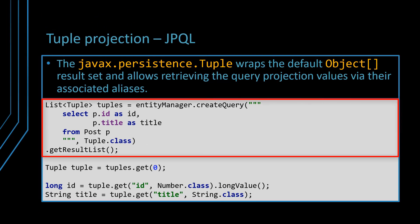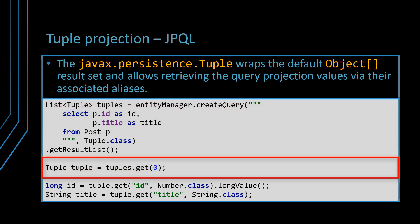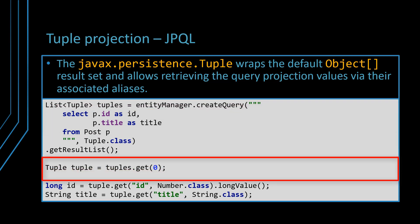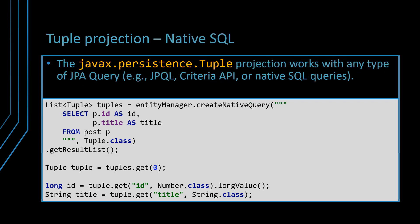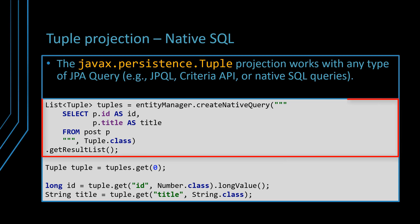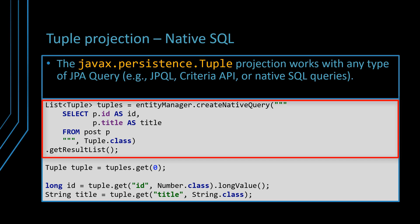JPA 2.0 added support for tuple projections. The Tuple container allows us to fetch the column values either via their associated column position or alias. Using the column alias is much more convenient than using the position, as changing the column order in the select clause is not going to break the data access code. Just like the default object array projection, the tuple result can be used with any type of query, so the previous JPQL can be translated to a native SQL query that returns the same tuple projection.